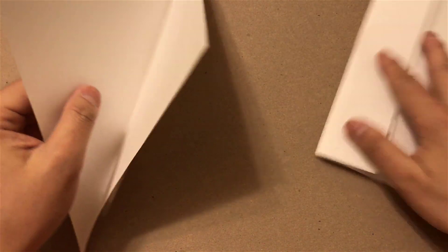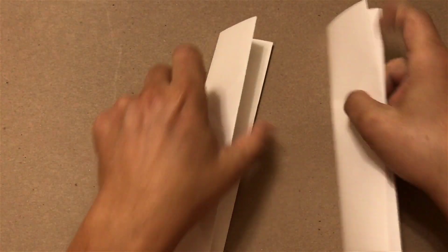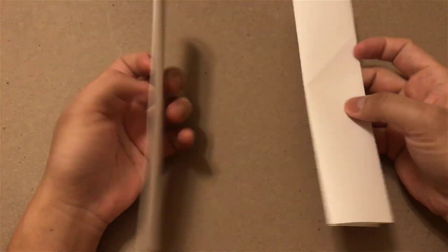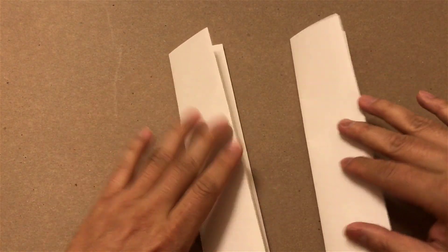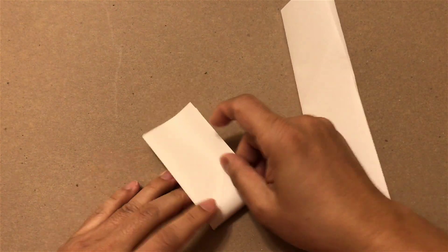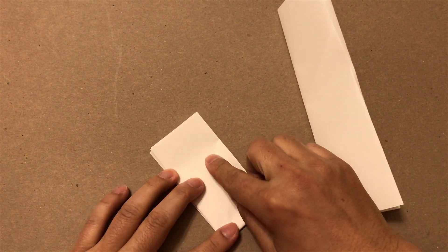Do the same for this one. Now we have two folded rectangles, and we're going to fold it this way in half.